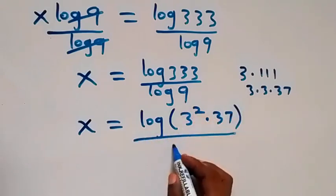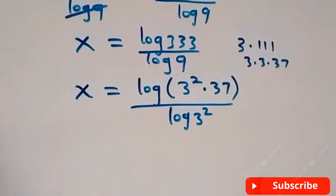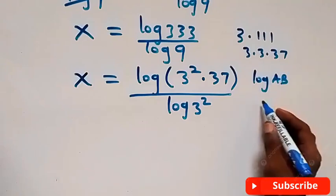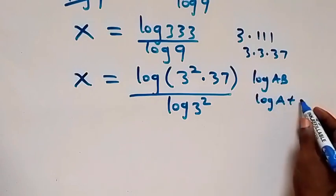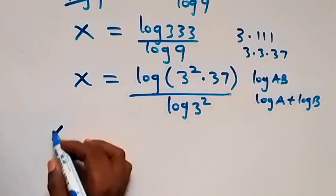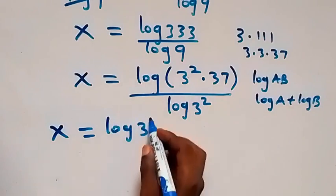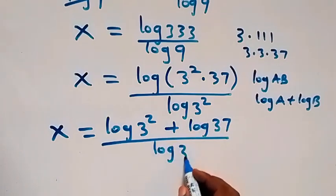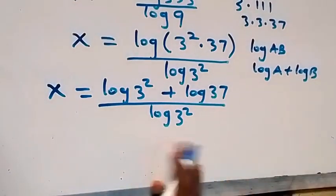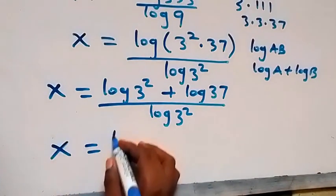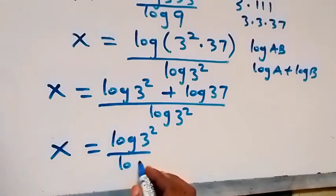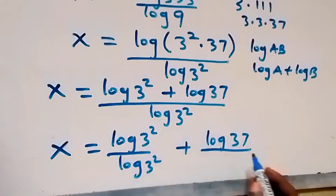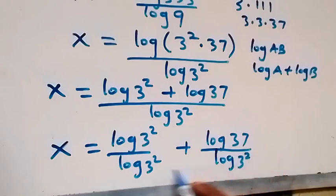We can also write 9 in the denominator as log 3 squared. Then applying the law of logarithms — where log AB equals log A plus log B — we get x equals log 3 squared plus log 37, all divided by log 3 squared. We can separate this into two fractions.